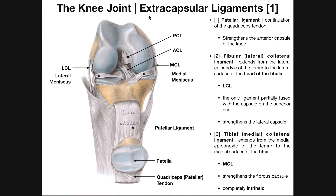So what does it mean to be an extracapsular ligament? The knee joint is a synovial joint, as we discussed in the previous video. Being a synovial joint, it has a very strong, very tough joint capsule. If a ligament is to be extracapsular, it has to exist and function outside of the joint capsule — at least outside the walls of that joint capsule. Three of those extracapsular ligaments are the patellar ligament, the LCL, and the MCL.